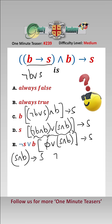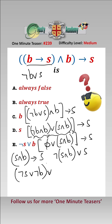Again by the implication law, we rewrite that as (not S and B) or S. By De Morgan's law, that is (not S or not B) or S, and by associativity that's not S or (S or not B).